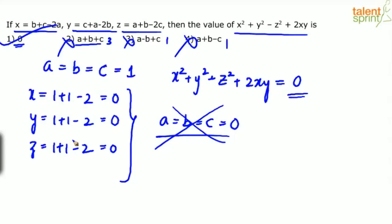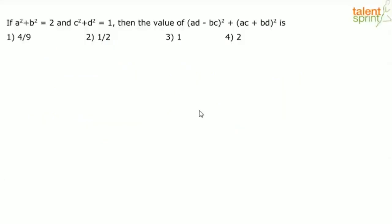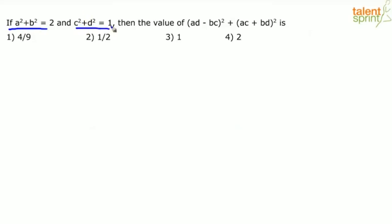Next question: if a squared plus b squared equals 2 and c squared plus d squared equals 1, then the value of (ad minus bc) squared plus (ac plus bd) squared is — options are 4/9, 1/2, 1, and 2. Here, conditions are given, so you must substitute values that satisfy both given equations.